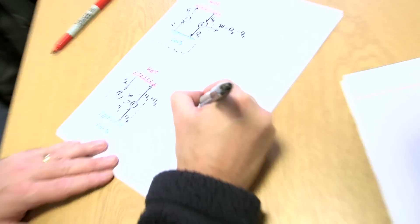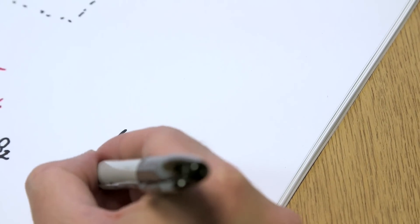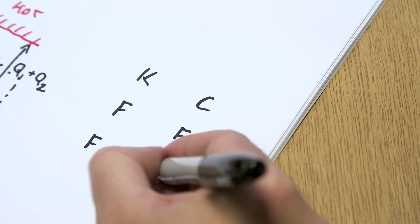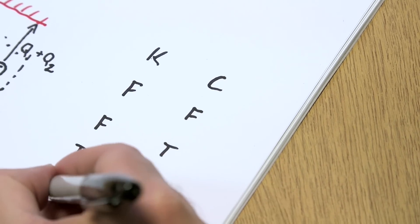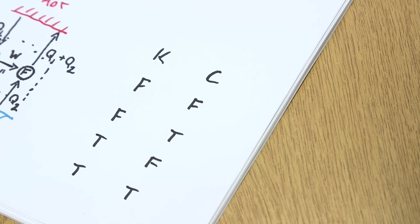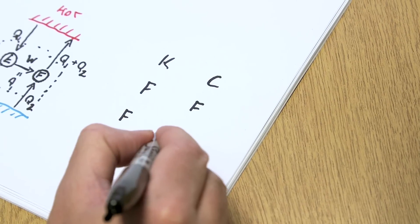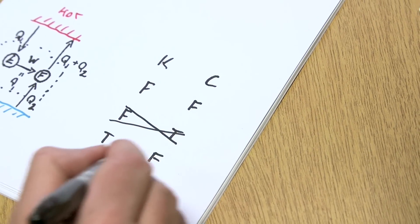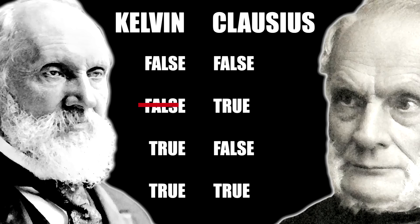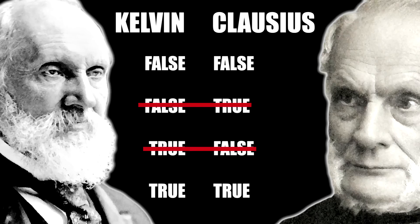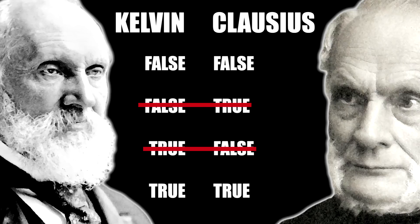So what we've shown is that if Kelvin's version of the second law isn't true, then Clausius' version isn't true, and if Clausius' version isn't true, then Kelvin's version isn't true either. There are four logical possibilities: both false, one true and the other false, or both true. We've ruled out the mixed cases, so the only possibilities are that they're either both wrong or both right — which is just another way of saying they're stating exactly the same thing. We haven't proven they're true, but we've shown they're equivalent.